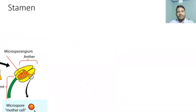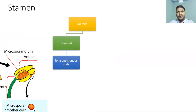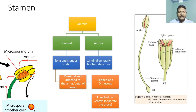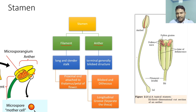When we talk about the stamens, we have to understand that the stamen consists of two main structures: the filament and the anther. The filament is basically a long, slender stalk.